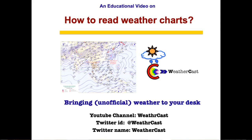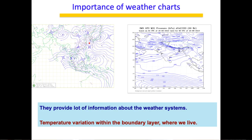Hello friends, welcome to Weathercast. Today's video is on how to read and interpret weather charts. Weather charts provide a lot of information about the weather systems and what kind of weather these systems can bring — whether it will be cloudy or sunny weather, and how temperature variation will happen within the boundary layer. The boundary layer is the portion where we all live, from the ground to approximately one kilometer above.